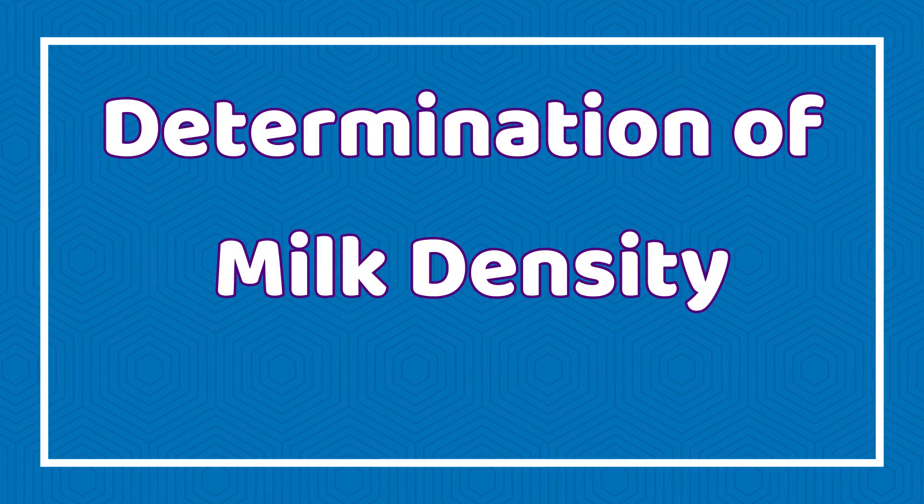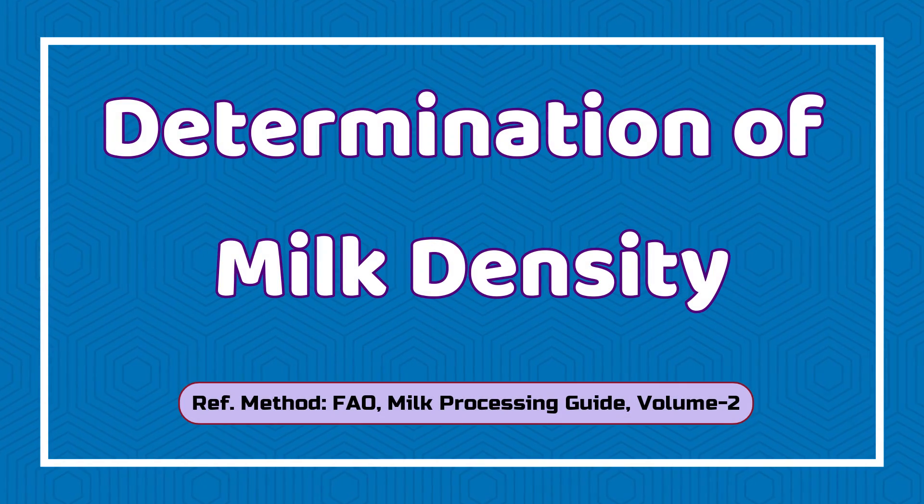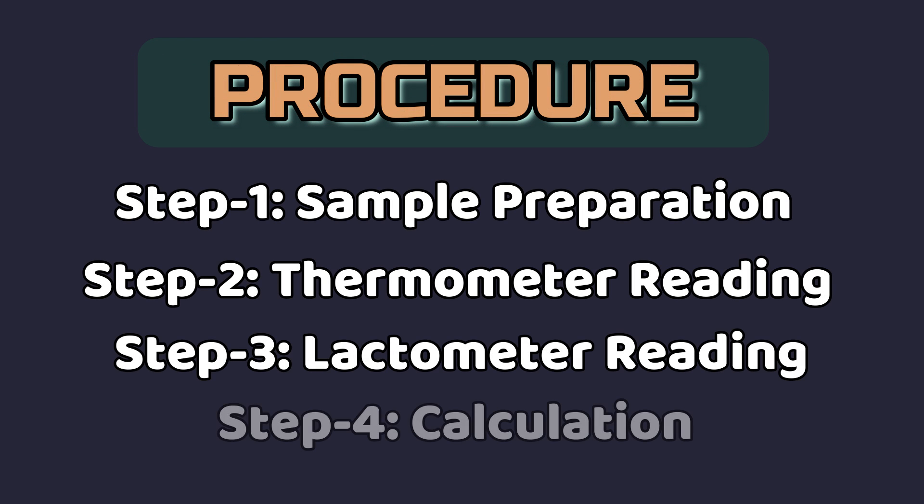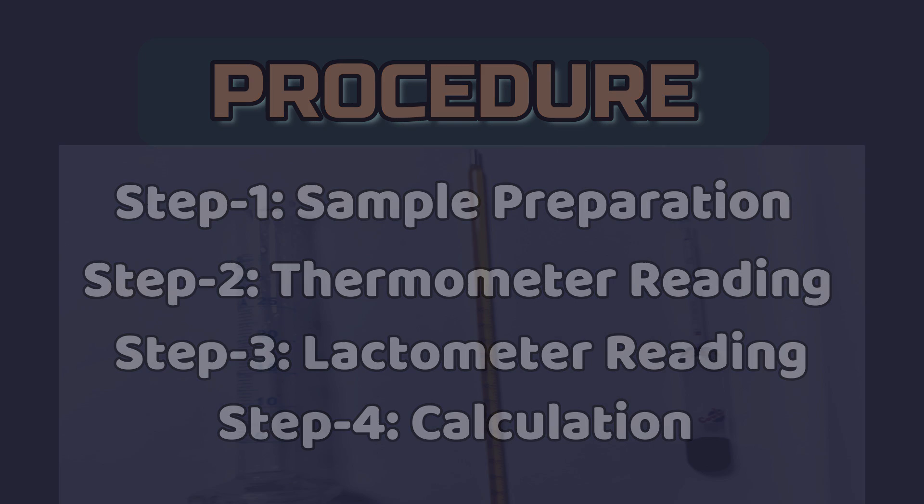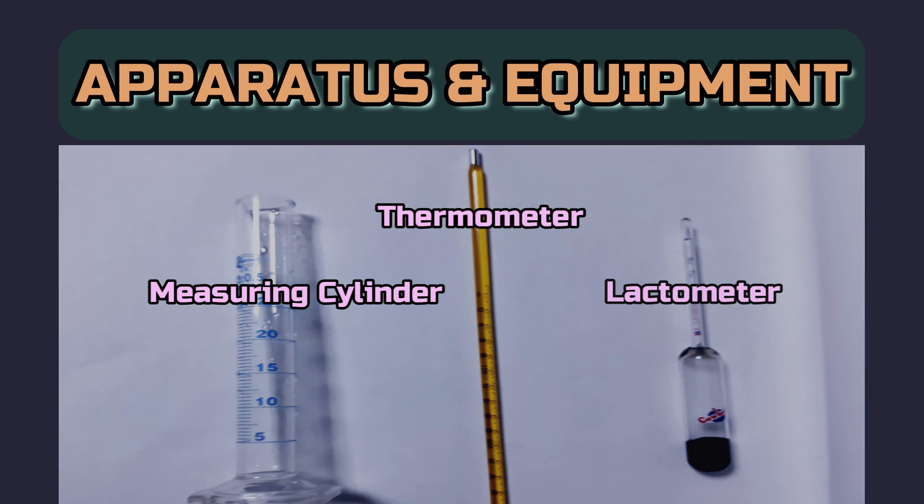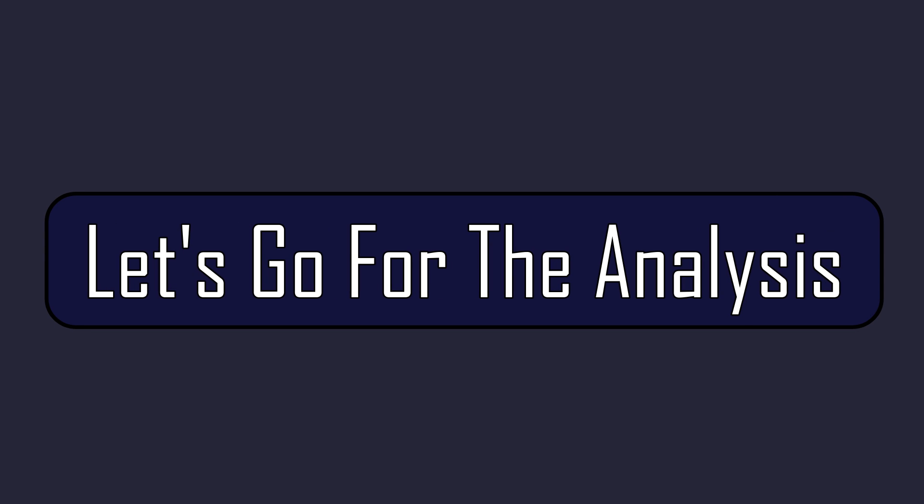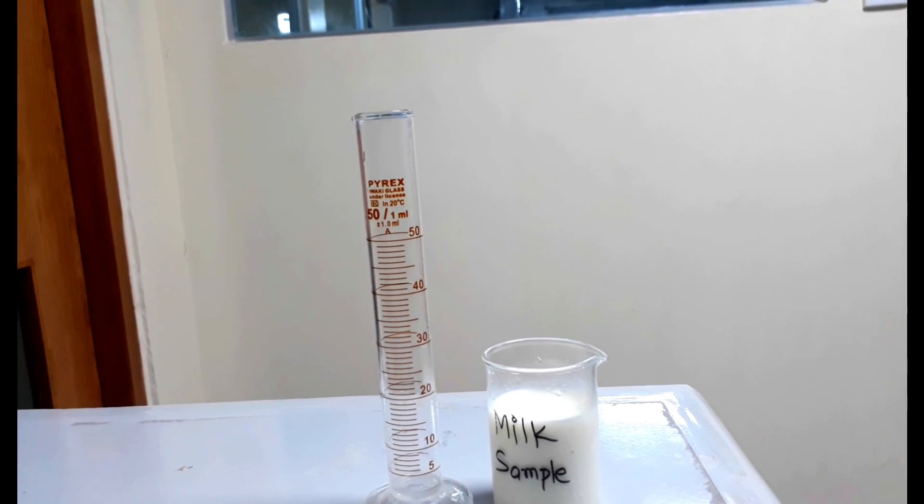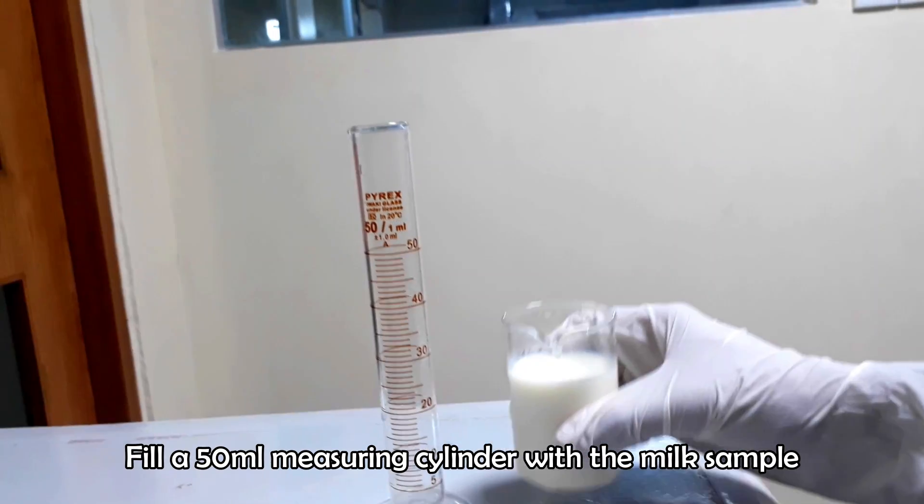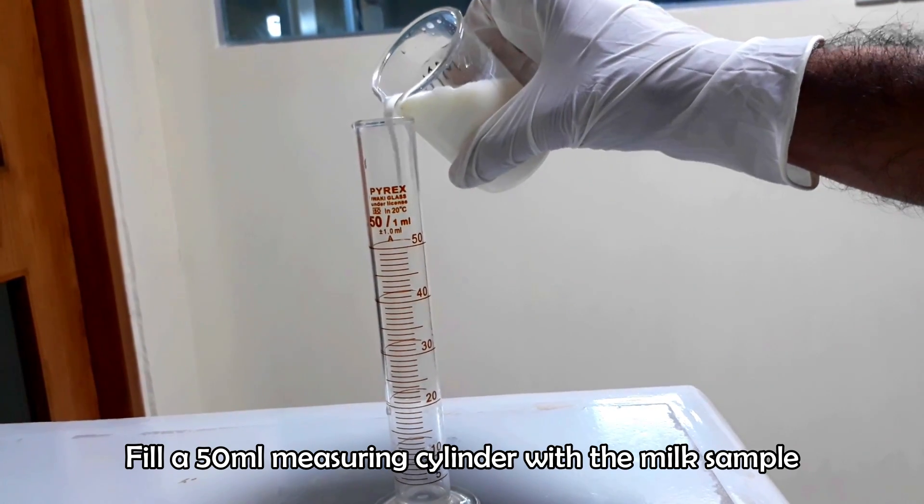Hello viewers, in this video we will show you the procedure for determining milk density using a lactometer. Steps for the test are sample preparation, thermometer reading, lactometer reading, and calculation. To conduct the test, we need a lactometer, measuring cylinder, and thermometer. Let's go for the test. Fill a 50ml measuring cylinder with the milk sample.